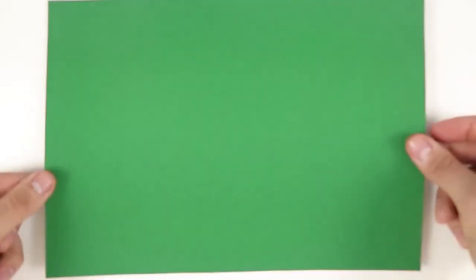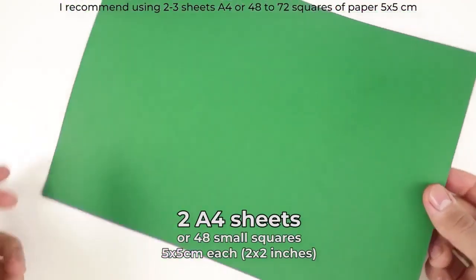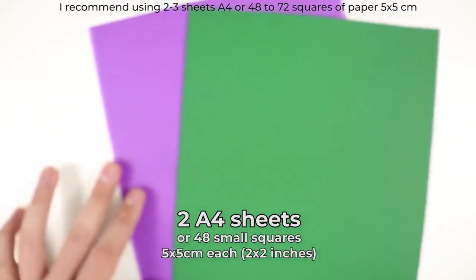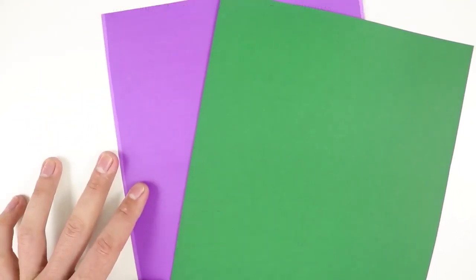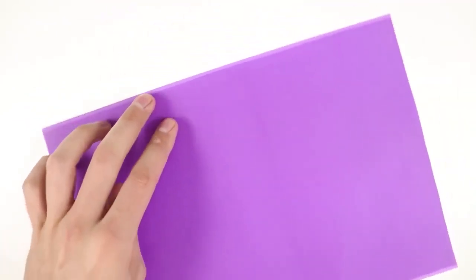To make it easier to understand, I'll start with two wafer sheets. If you already have the required squares, you can skip this step. First of all, we need to divide each sheet into three equal parts.